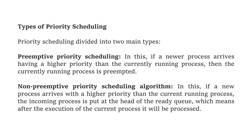There are two types of priority scheduling: preemptive and non-preemptive approaches. In the preemptive approach, if a newer process arrives having a higher priority than the currently running process, then the currently running process is preempted and the process with higher priority will be executed.